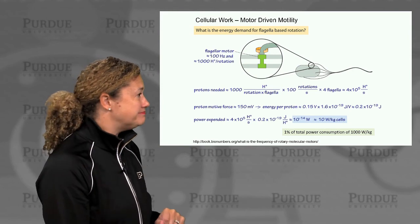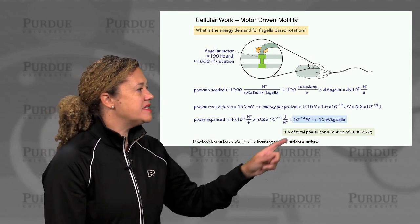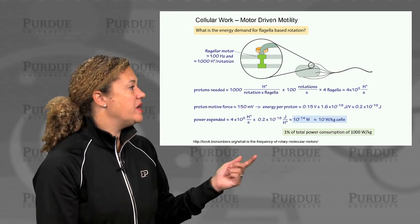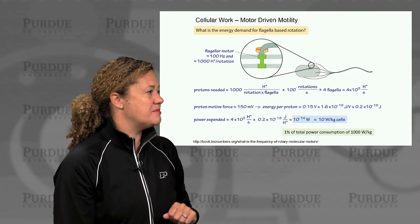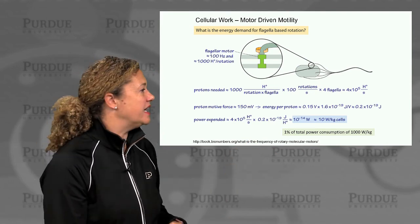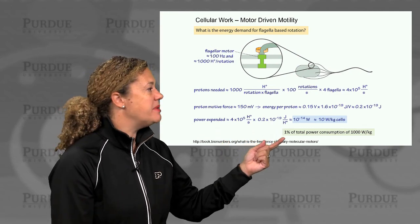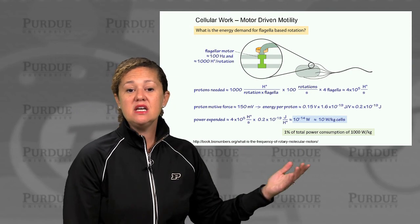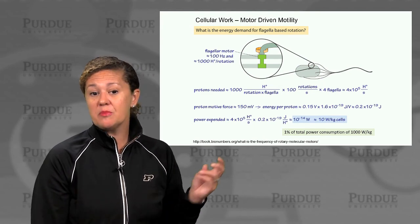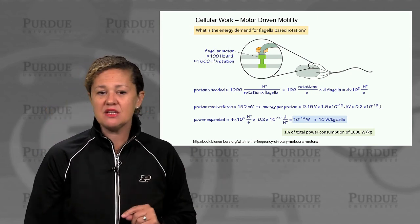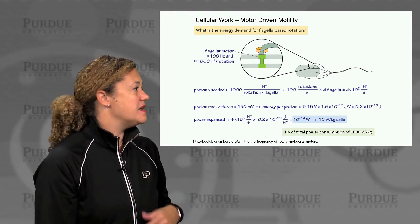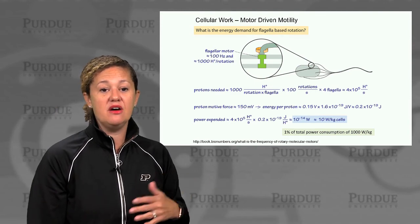This is the same order of magnitude as our actin-based motility. Thinking about this per kilogram of cell, it's about 10 watts per kilogram. The total power consumption of a bacterium is about 1,000 watts per kilogram, so this motility takes only about 1% of the total power consumption of the cell for swimming. Back-of-the-envelope calculations like these help us build intuition about the energy budget and power consumption used by the cell to do different types of work.